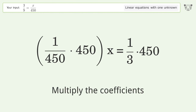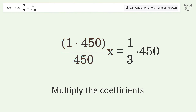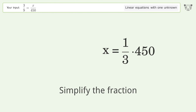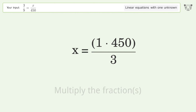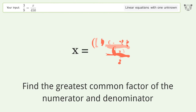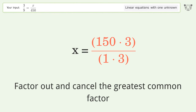Multiply the coefficients. Simplify the fraction. Multiply the fractions. Find the greatest common factor of the numerator and denominator, then factor out and cancel the greatest common factor.